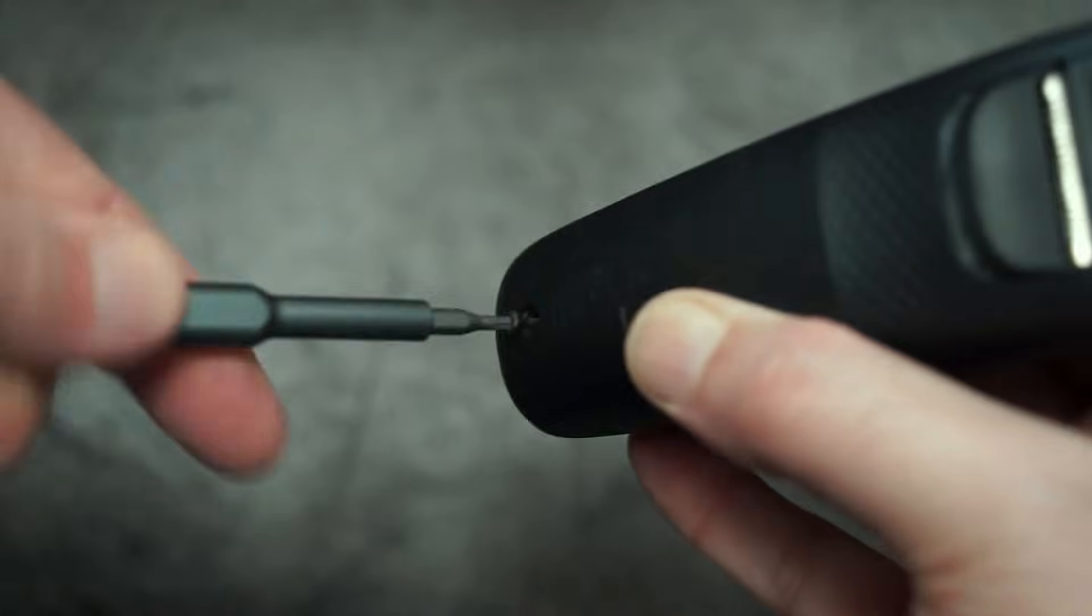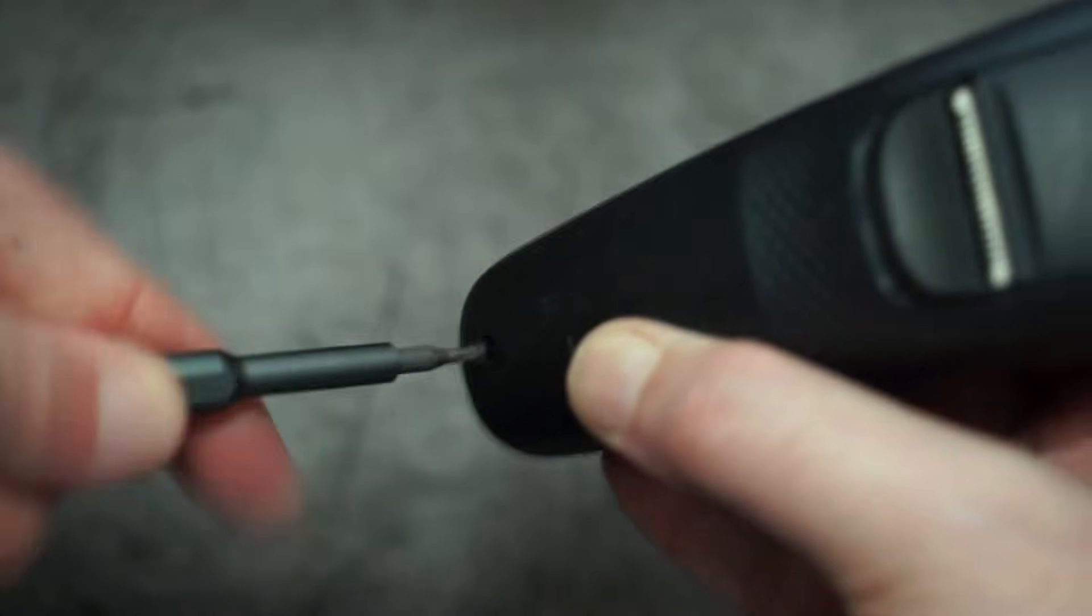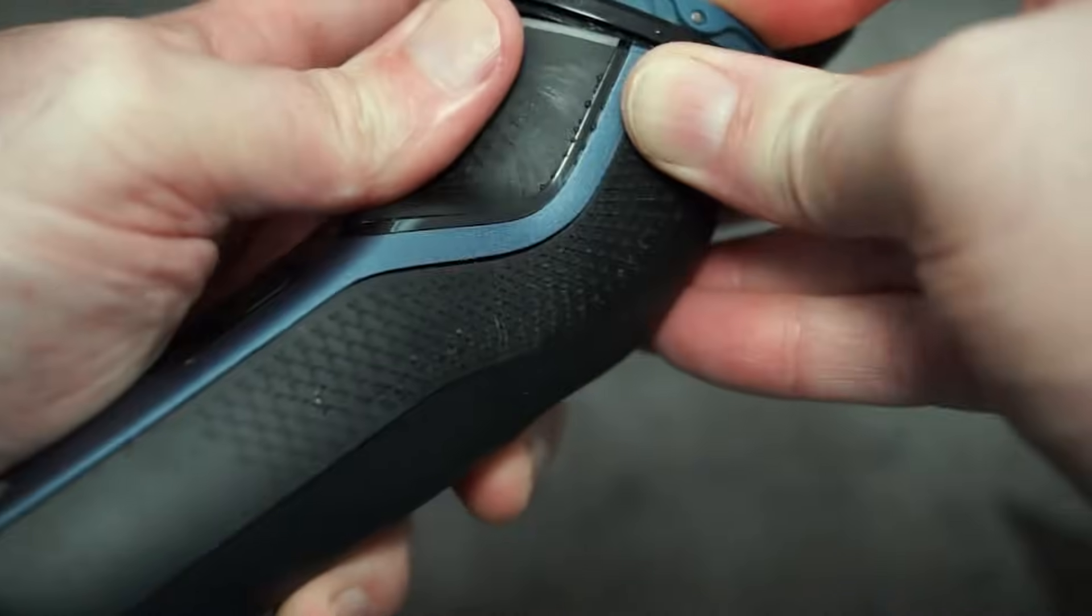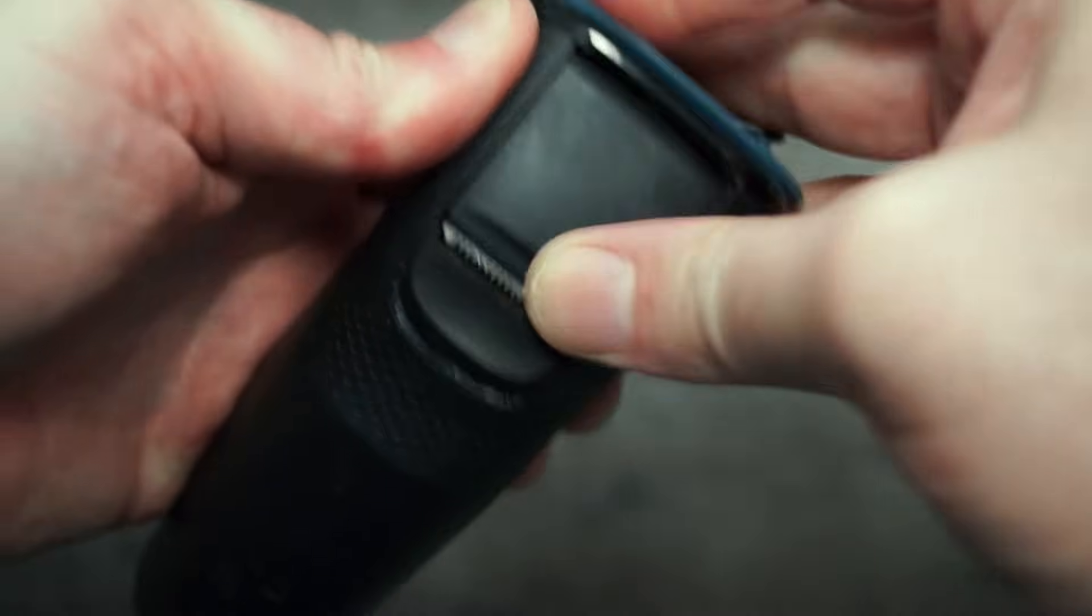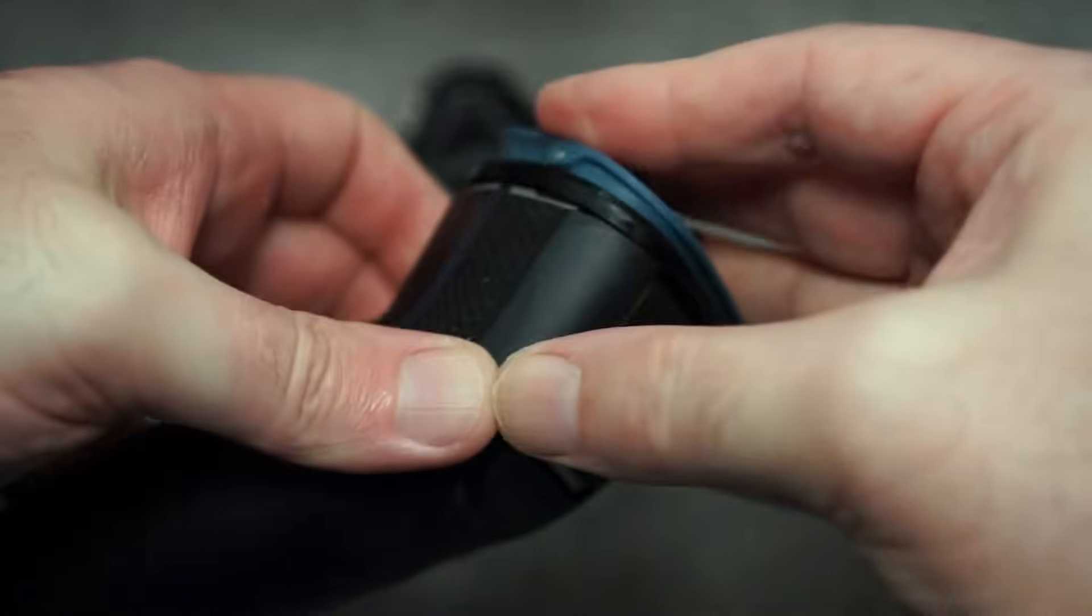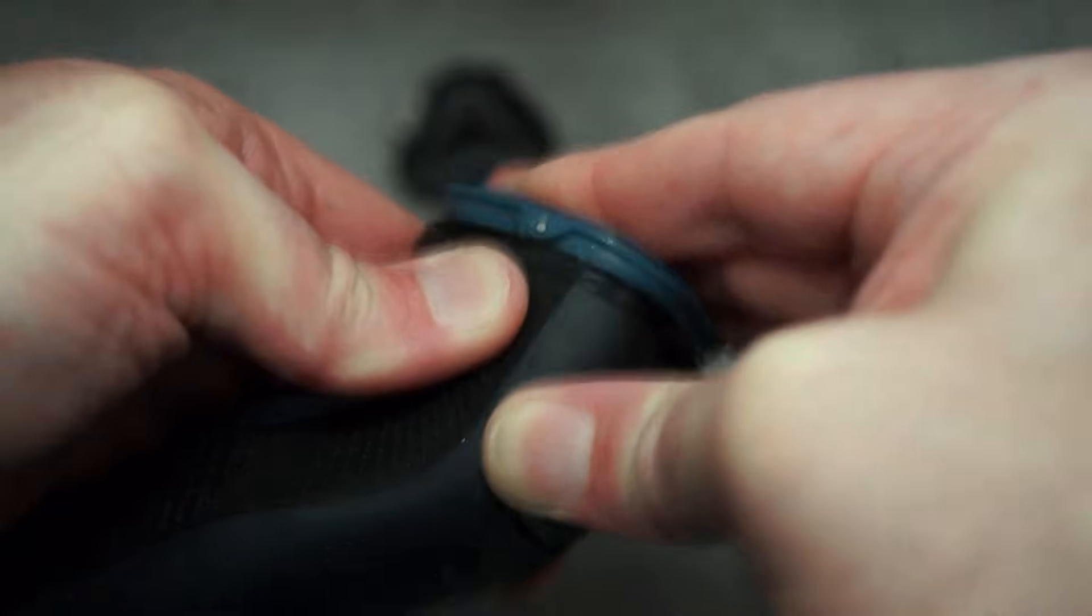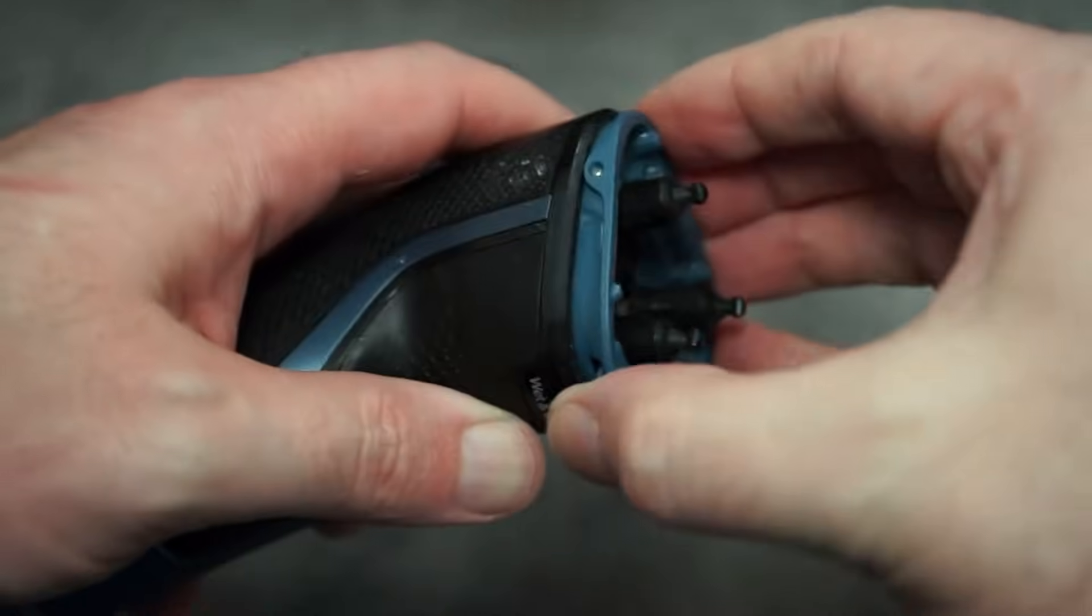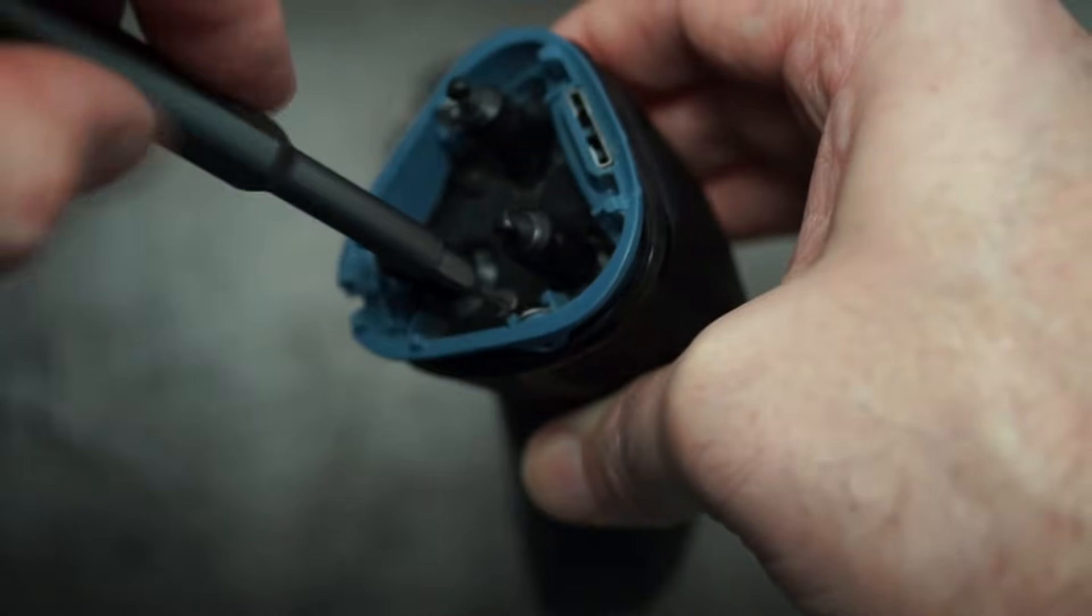I find it easier to put the bottom screw in first. That way it holds things together. Then fit the top part—that's a bit trickier because you have to push the plastic under the lip. But once you've got that in place, you'll see it snug all the way around, and then it should fit absolutely fine.